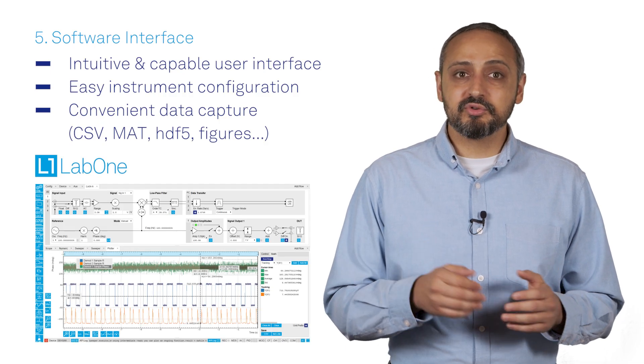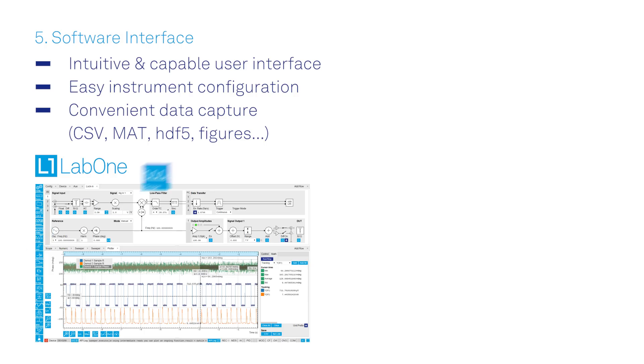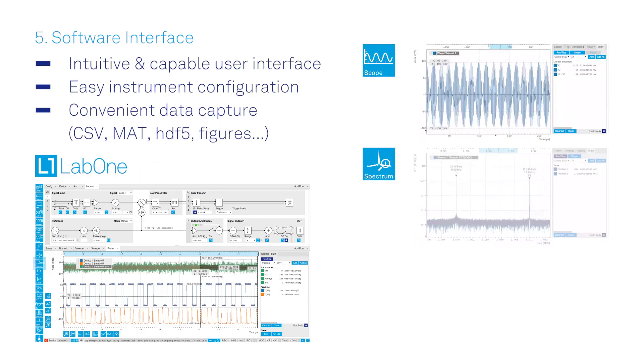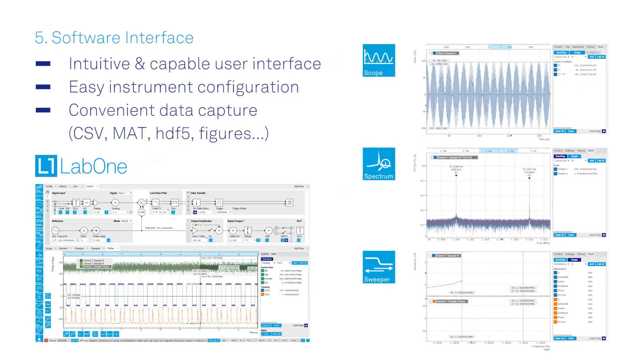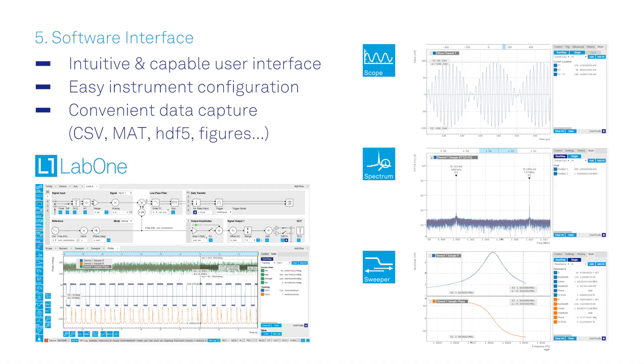Also, it provides direct control of all additional tools included in modern lock-in amplifiers, such as an oscilloscope, spectrum analyzer, and parametric sweeper. Employing those tools in parallel can help you gain a more thorough understanding of the signals in your experiment.